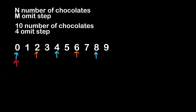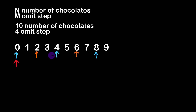The easiest way to solve this is using a brute force approach with a for loop going through all the elements of the array and eating one chocolate every M chocolates. We can include a counter variable that is incremented every time we eat a chocolate, and the program stops when we reach a place where the chocolate has already been eaten, meaning at position zero for this particular example.